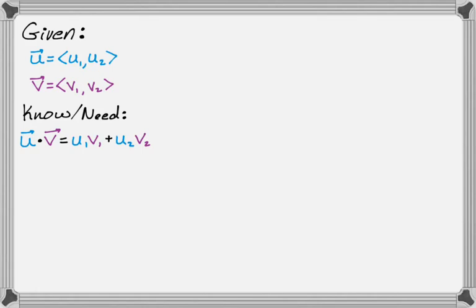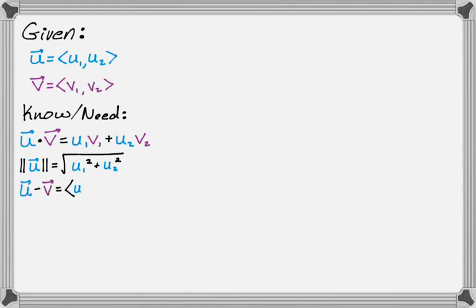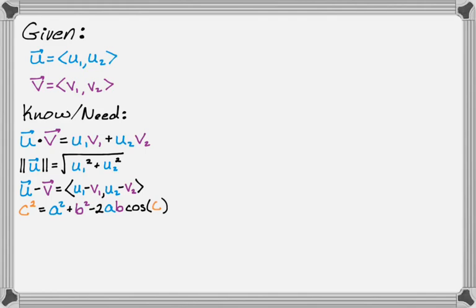We need to know the magnitude or norm of a vector, which is the square root of the first component squared plus the second component squared. We need to know how to subtract vectors in component form: u minus v is (u1 minus v1, u2 minus v2). And we need to know the law of cosines: c squared equals a squared plus b squared minus 2ab cosine of C, where C is the angle between a and b.